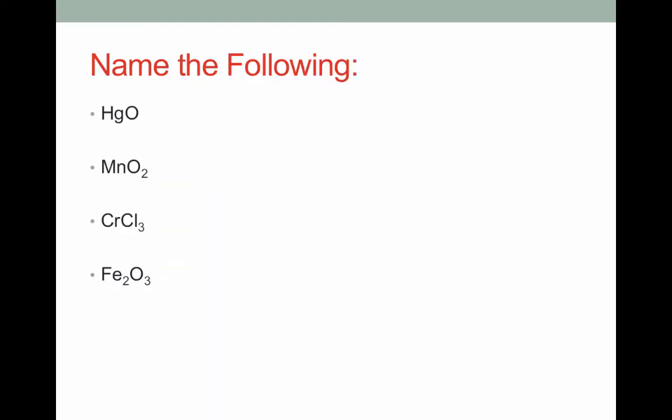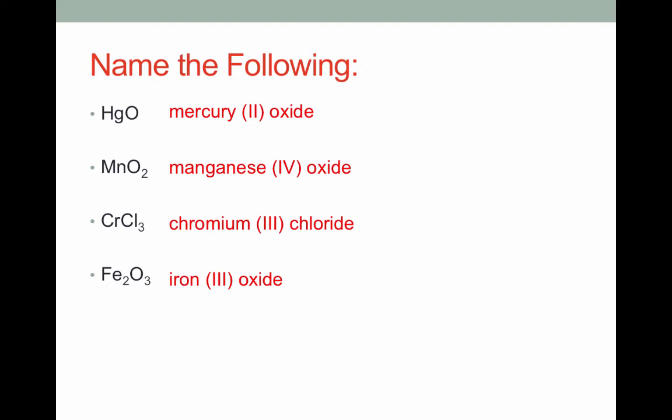Here's some examples of this for you to try on your own. Pause the video here and when you come back, I'll display the answers. Welcome back. Here's what you should have gotten. Notice in each case, we have a Roman numeral indicating the charge on the cation because each of these cations falls in the transition metal area of the periodic table.